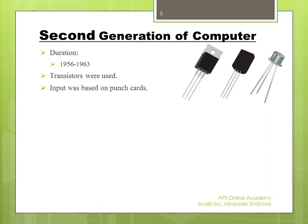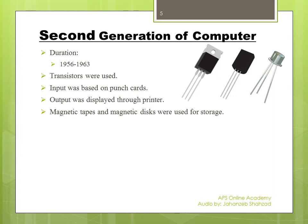Input was still based on punch cards, as was used in the first generation. Output was displayed through printers — in the first generation an electric typewriter was used, but now printers were used. Magnetic tapes and magnetic disks were used for storage, as opposed to vacuum tubes storing data in the first generation.